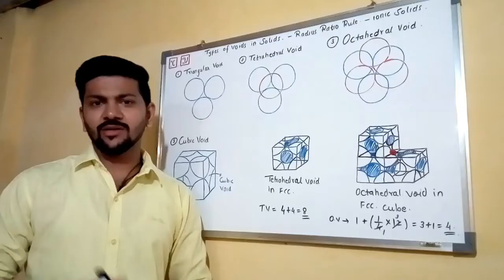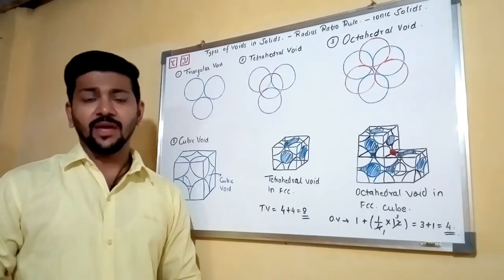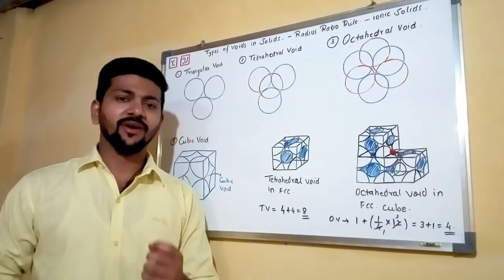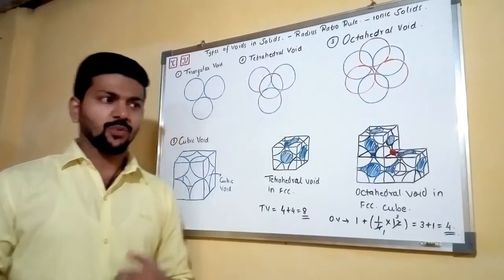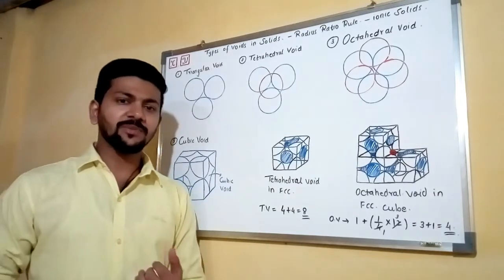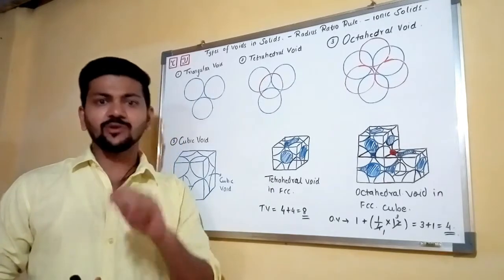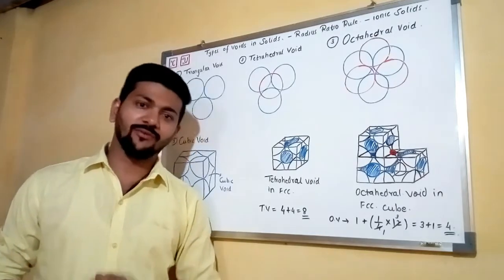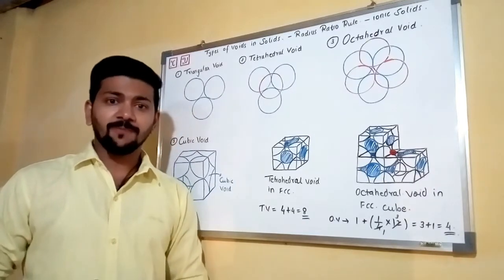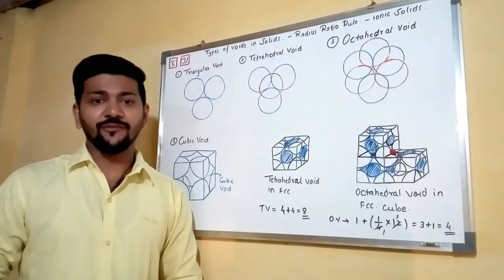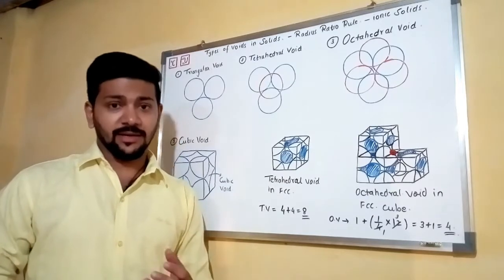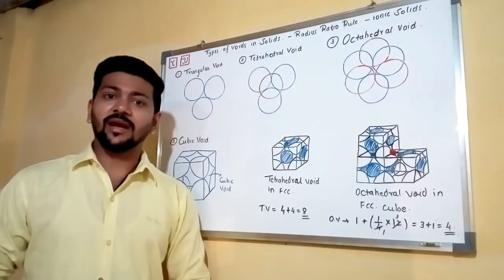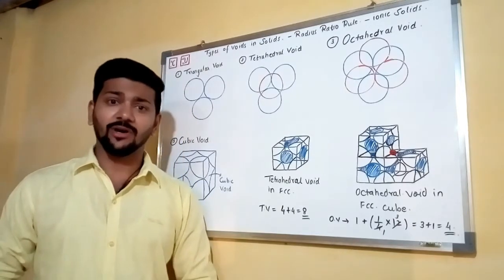Welcome to chemistry. Today we are going to learn about types of voids in solids, and also how to identify them. We'll see tetrahedral voids, octahedral voids, and how to identify them in an FCC cube. We will also prove that if there are n number of particles in a cube, there are 2n tetrahedral voids and n octahedral voids.